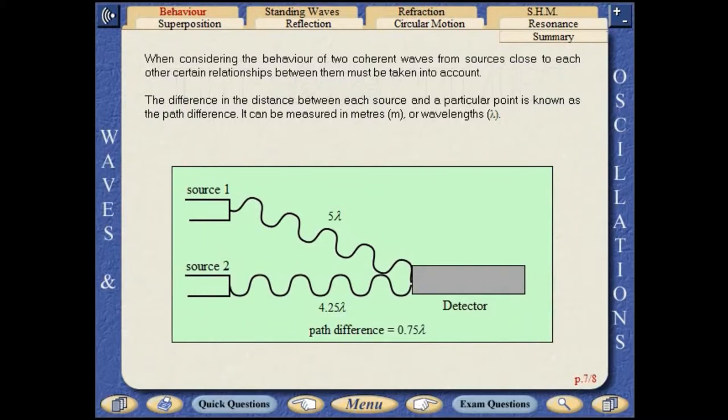When considering the behaviour of two coherent waves from sources close to each other, relationships between them must be considered. The difference in the distance between each source and a particular point is known as the path difference. It can be measured in metres or wavelengths.